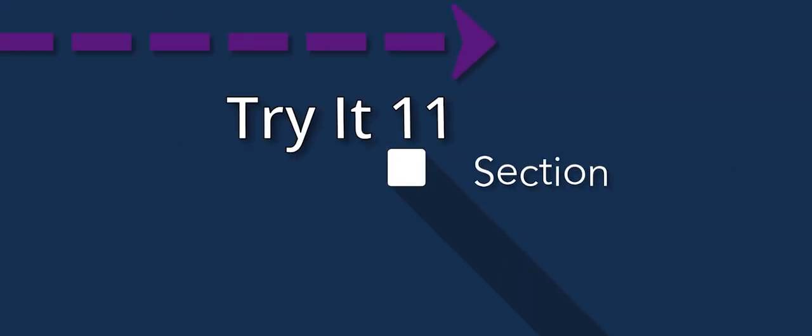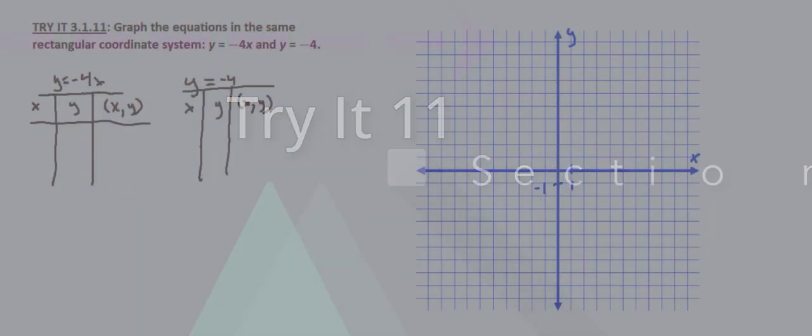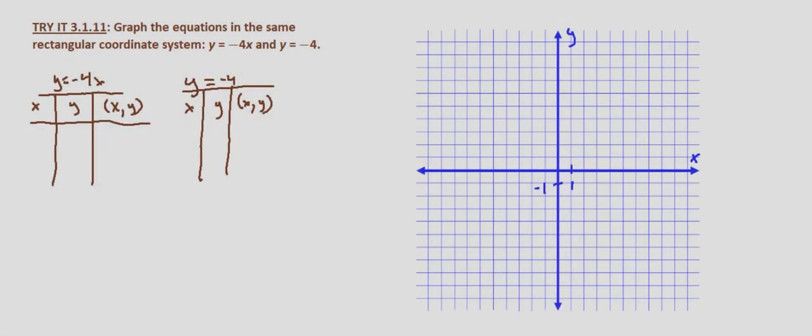It's not uncommon for students to get confused about when y equals a number compared to when y equals a number times x. There is a difference because the number times x shows the rate of change.